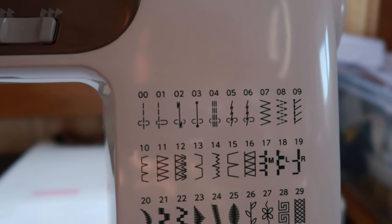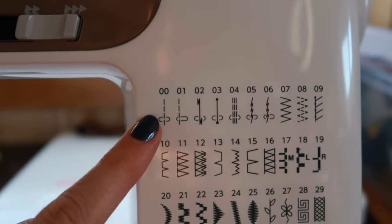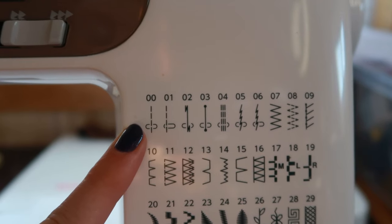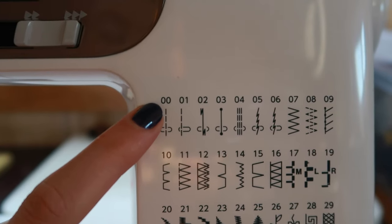Since we are wanting to sew on a regular straight stitch we are going to make sure that our sewing machine stitch function is going to be on the straight stitch. The numbers on your sewing machine might be different, but for my sewing machine a straight centered stitch is going to be zero zero.